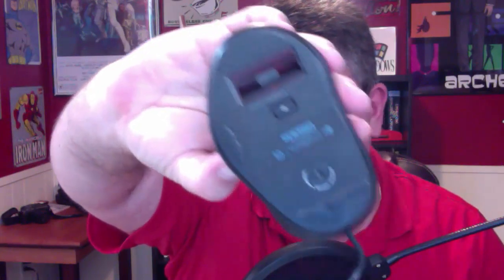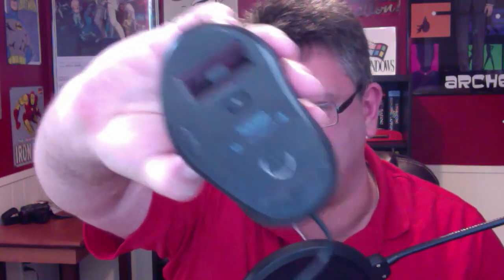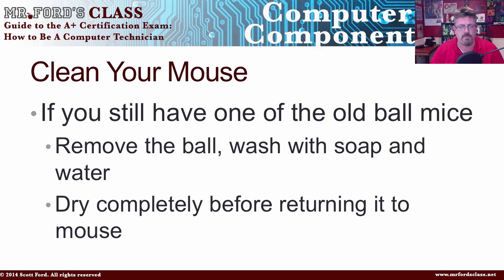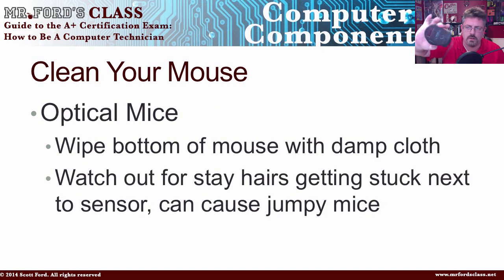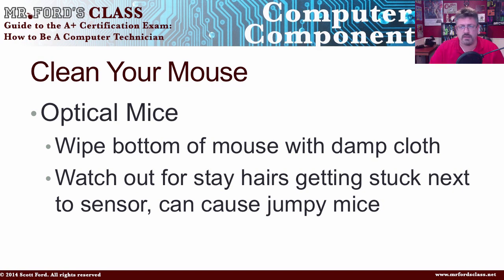The bottom of my mouse doesn't have a little ball — it has an optic. It's an optical mouse. If you still have a ball mouse, you need to clean those by taking the ball out. For optical mice, just wipe the bottom with a damp cloth. If your cursor starts jumping around unexpectedly, it could be a hair stuck in there — especially if you have animals. A bit of canned air or a damp cloth and you're good to go.